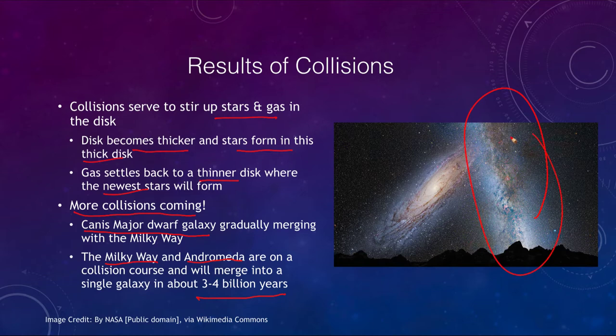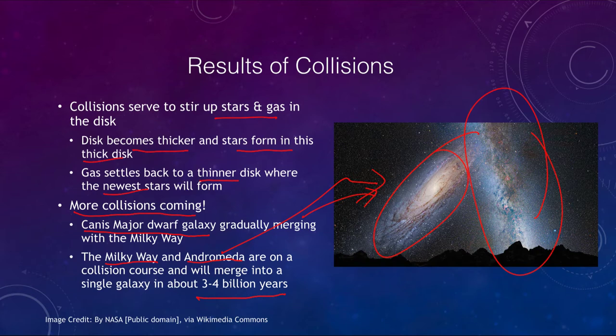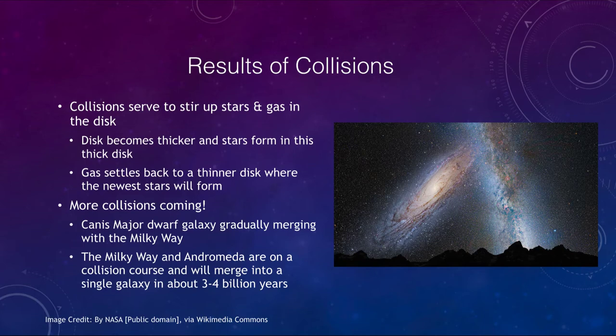On a larger scale, the Milky Way and the Andromeda galaxy are on a collision course and will merge into a single galaxy in three to four billion years. Here we see an artist's conception of what that would look like — as Andromeda approaches over billions of years it will appear much larger in our sky, and eventually the two galaxies will collide and merge into a much larger, probably elliptical, galaxy.